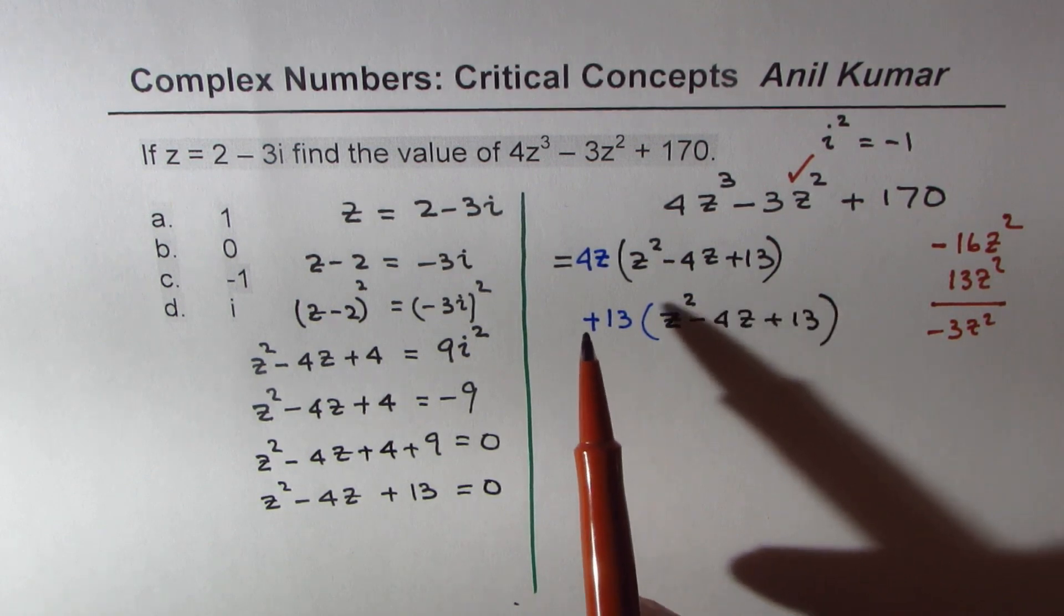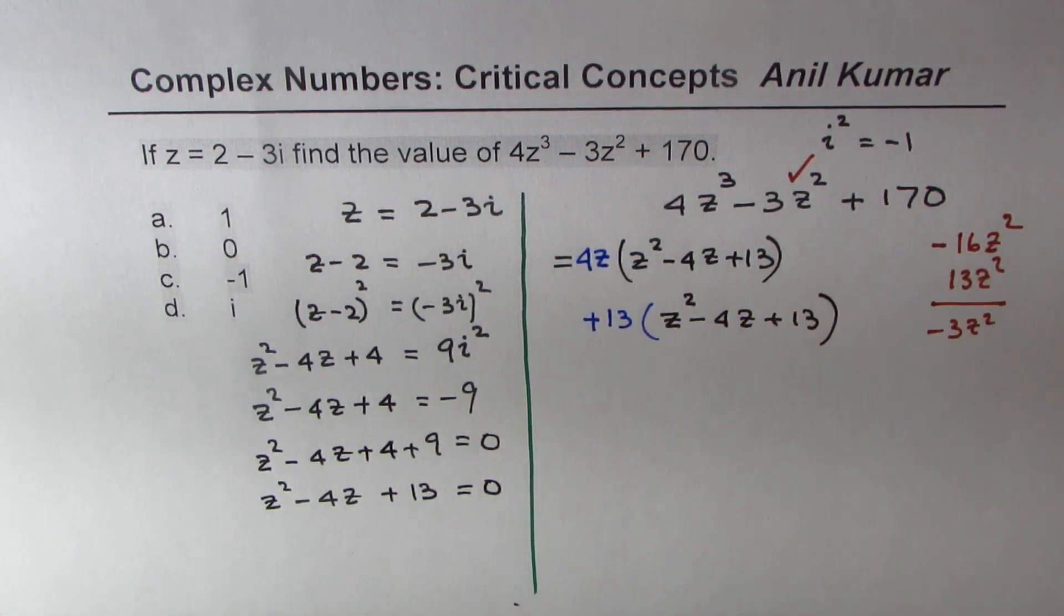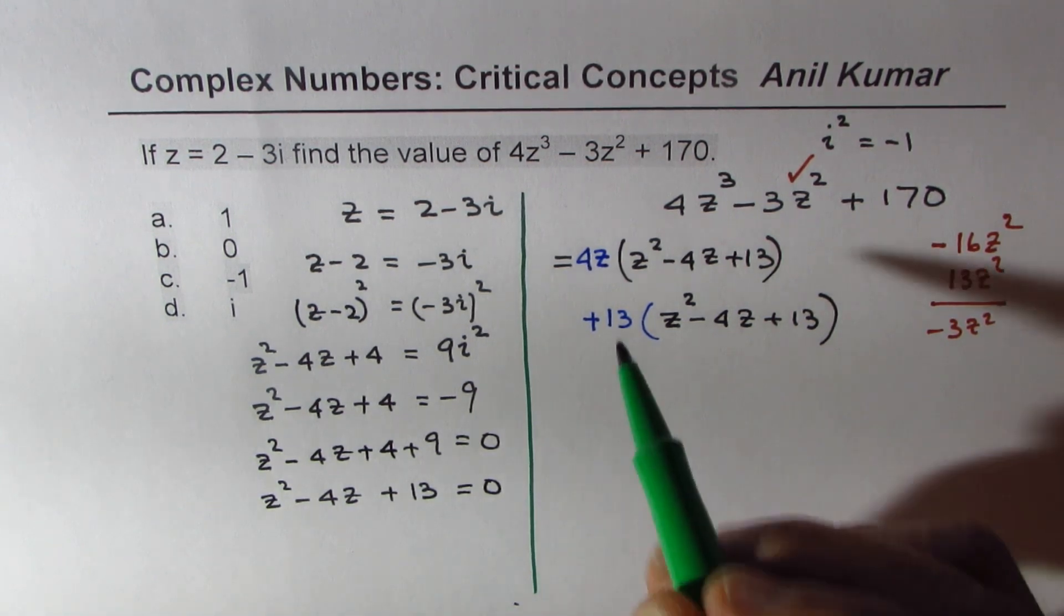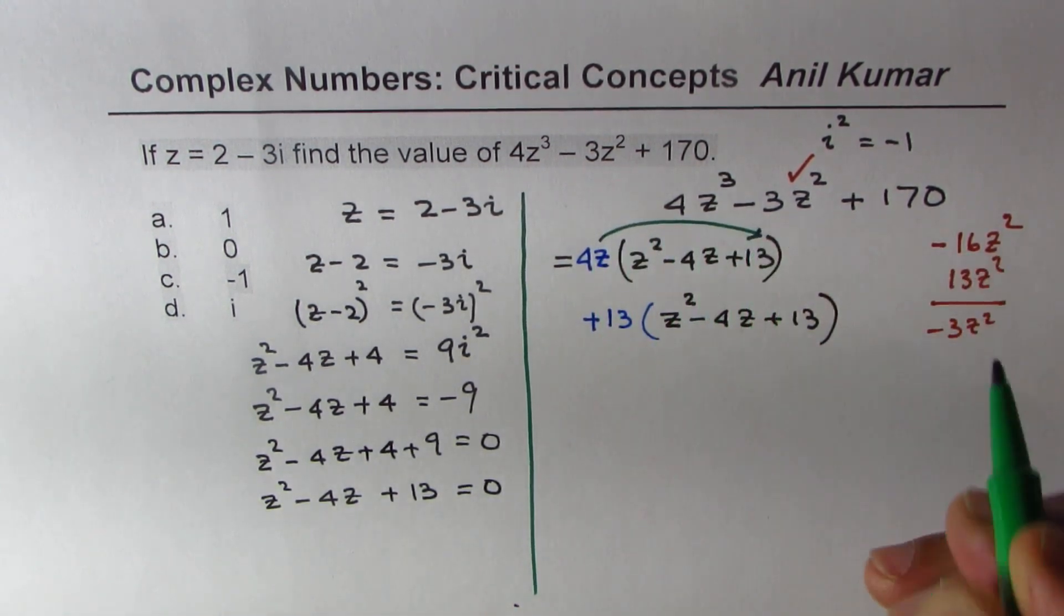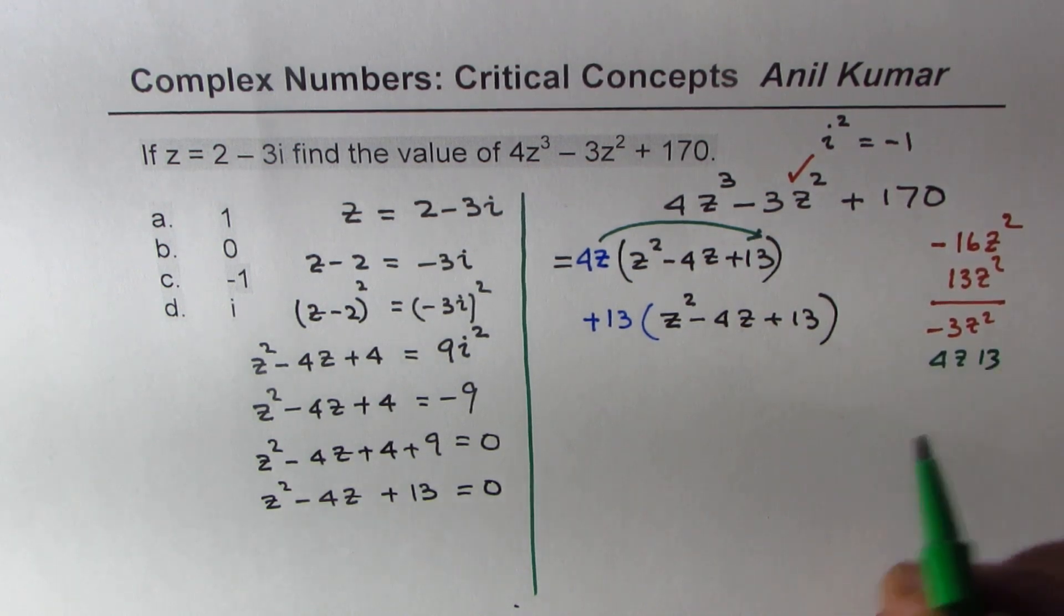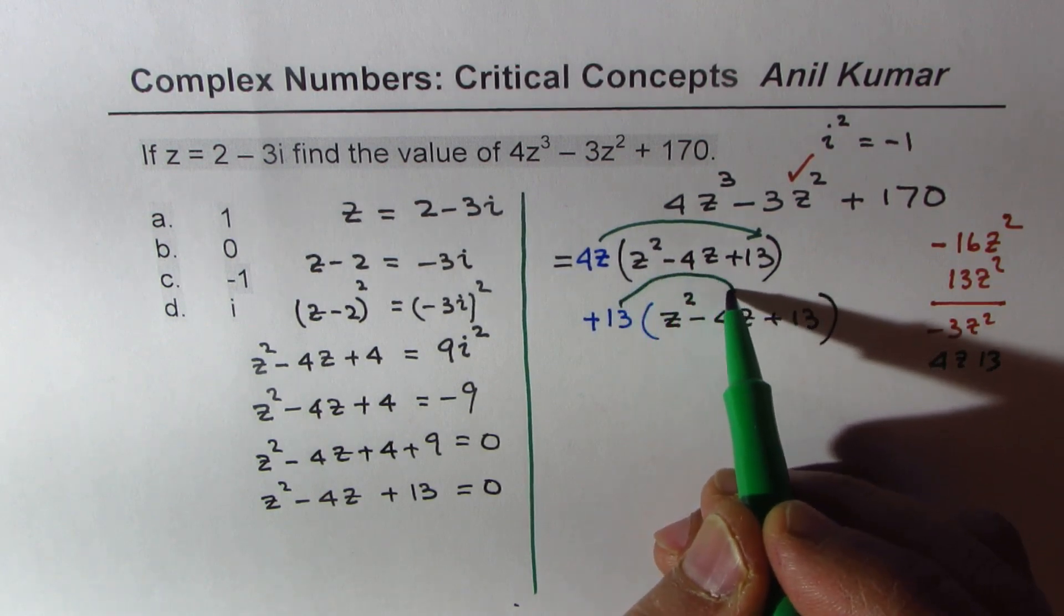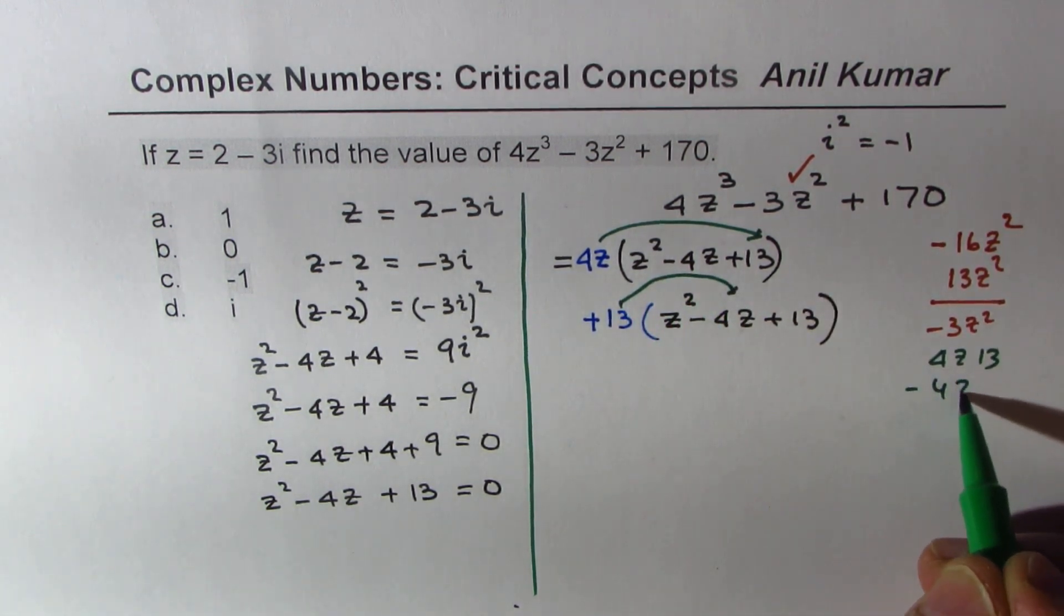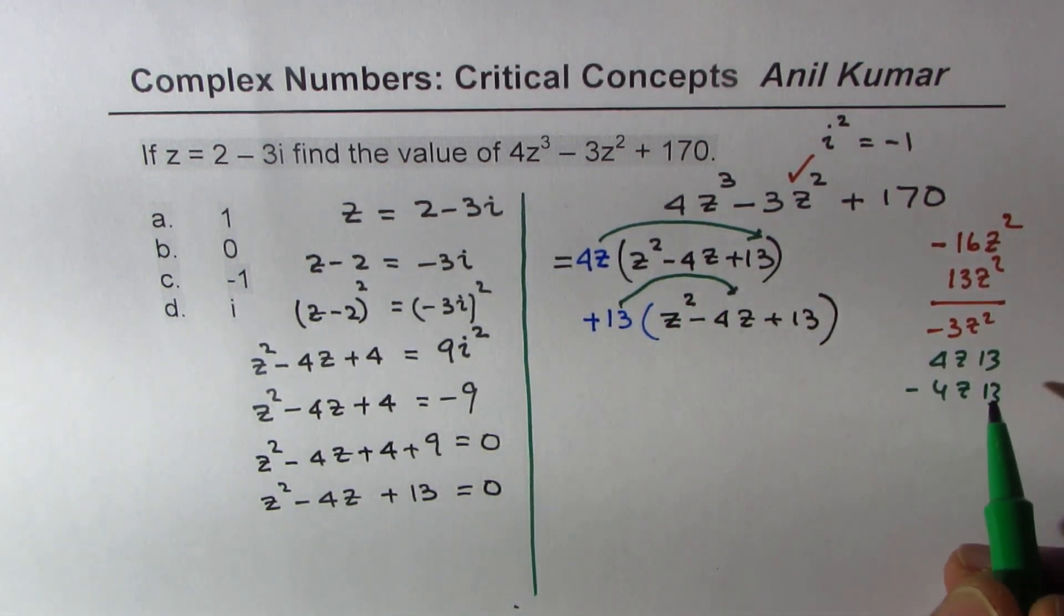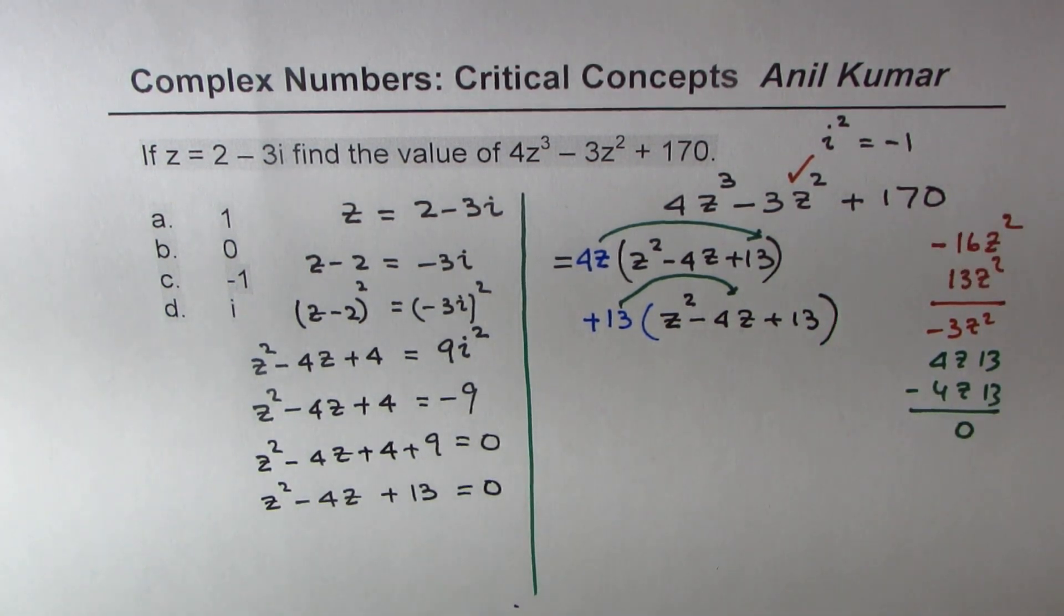So we have another term—let me show you this. When you multiply this with this, we have 4z times 13, and here also we have -4z times 13. Do you see that? So they give you 0, and we do not have any z term, so it works perfectly fine.